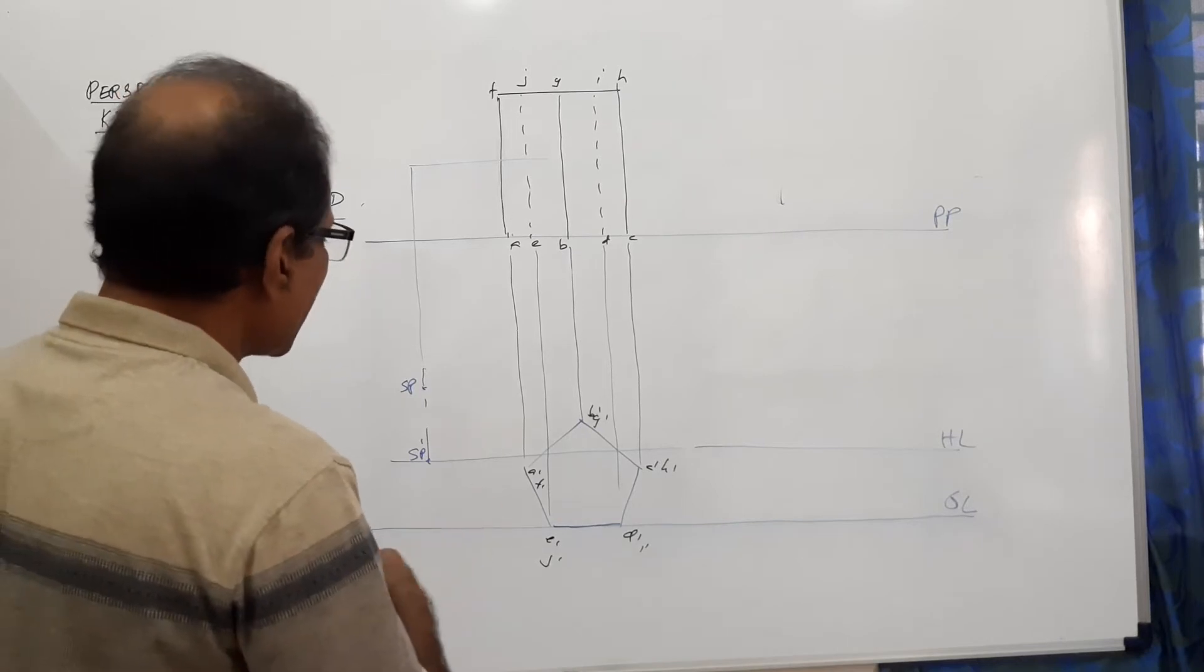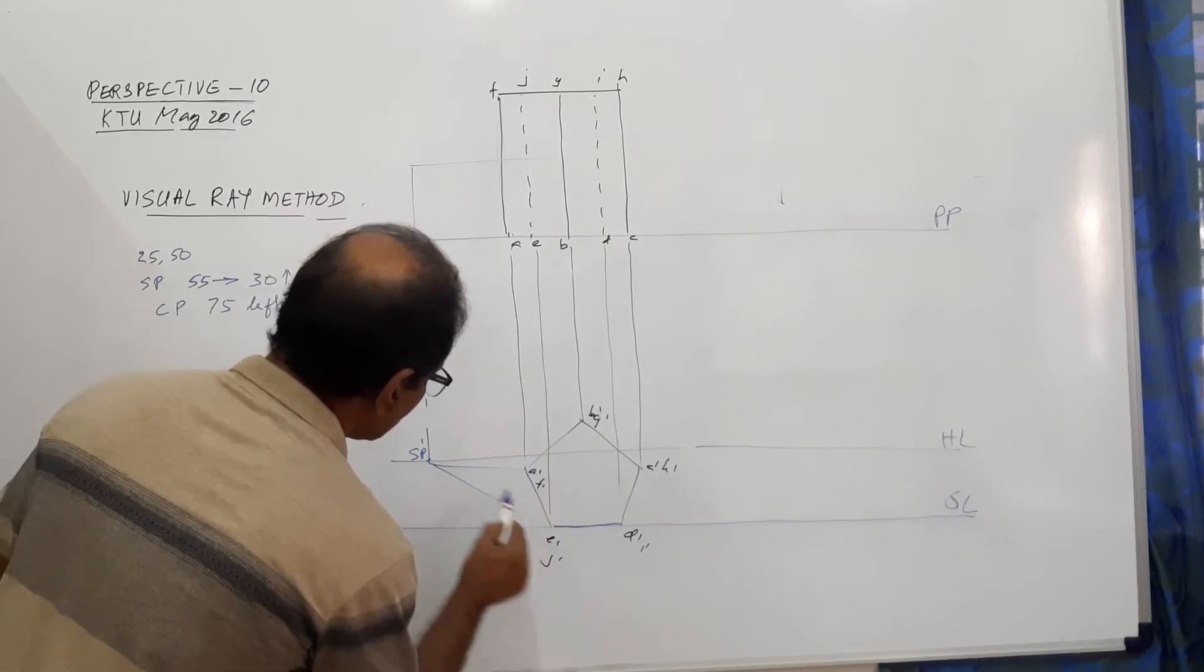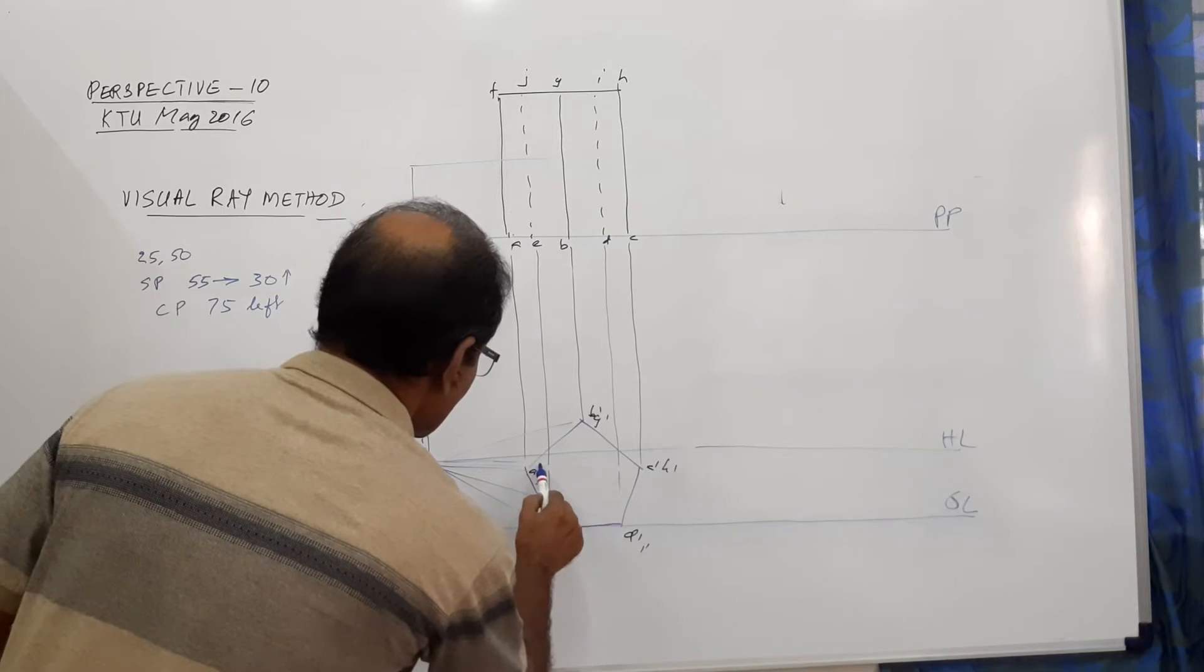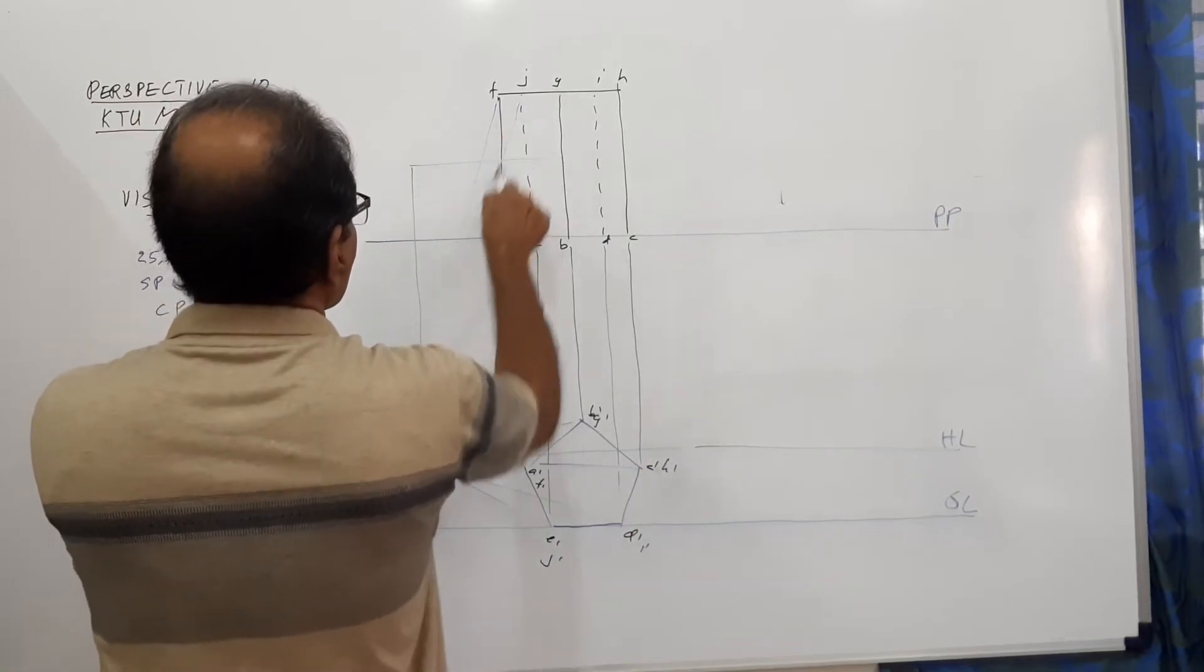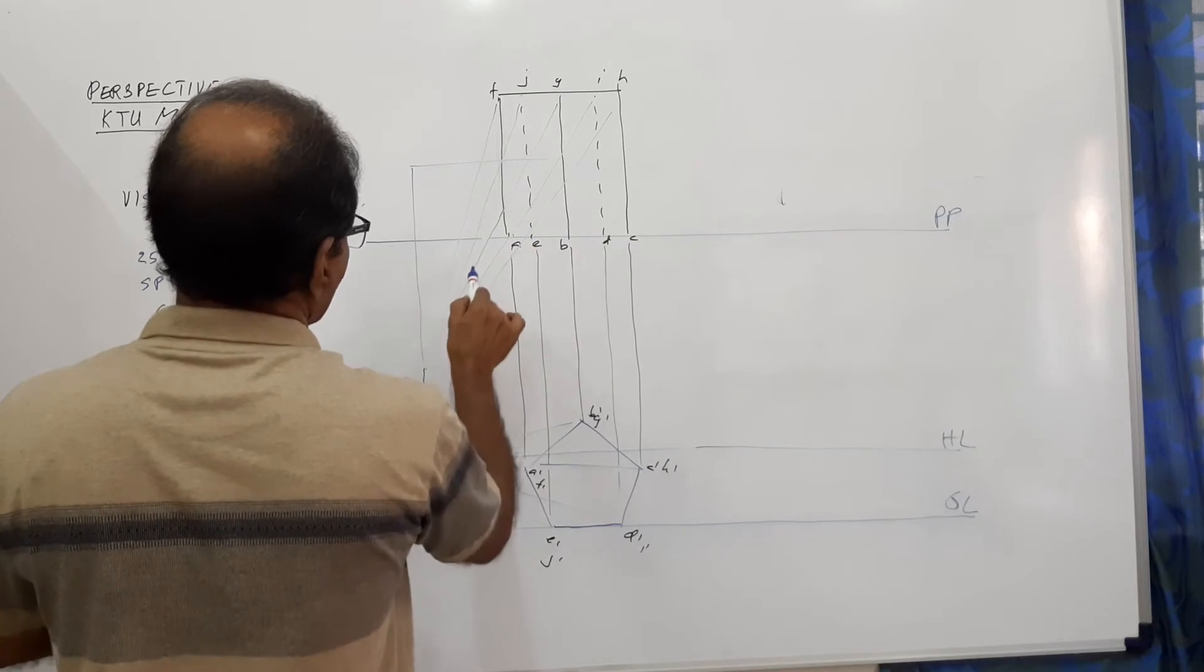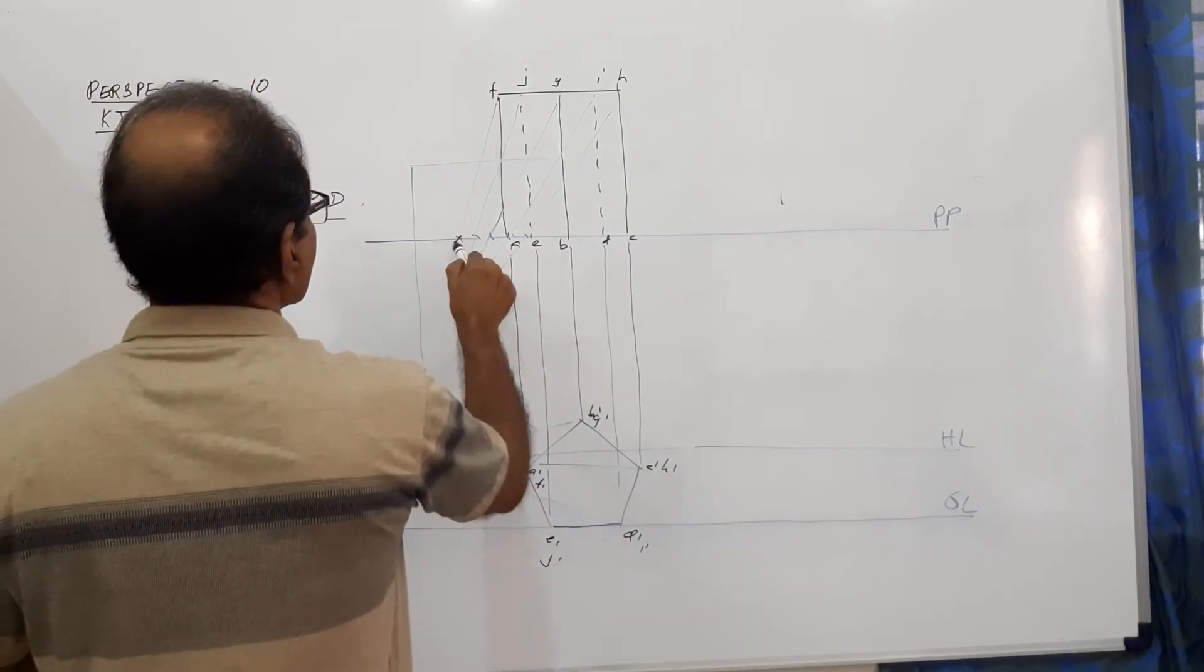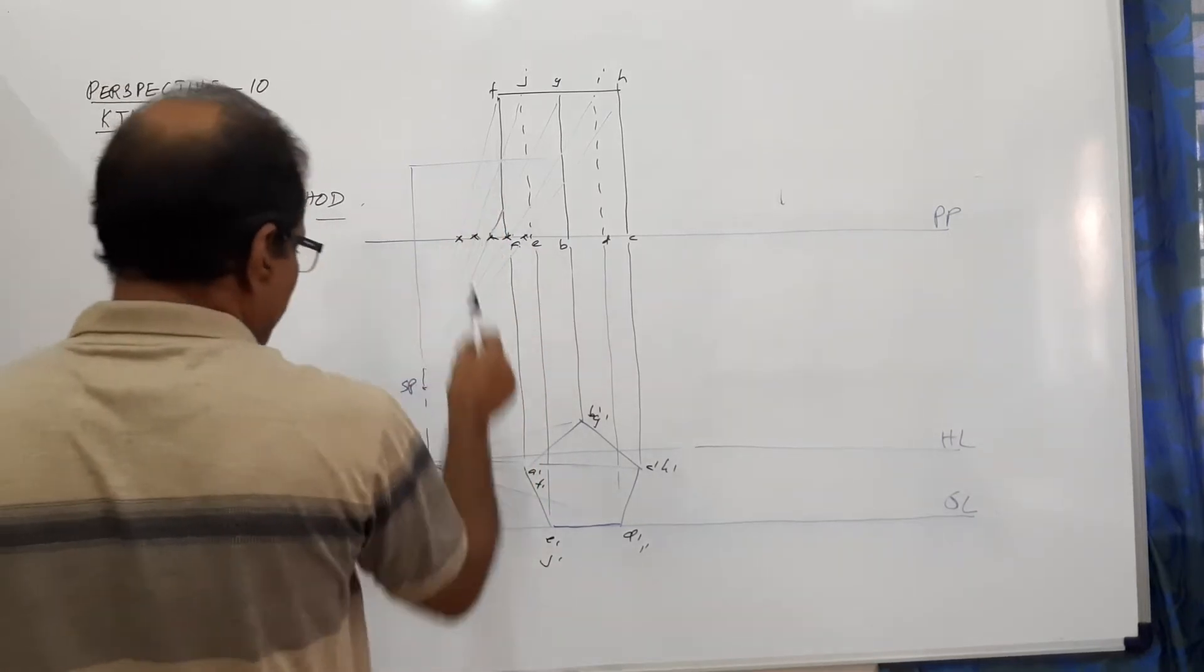Now, I joined all points of the elevation to SP dash. And all points of the plan to SP. These are the intercepts. Drop them. Drop the intercept of F to A dash. This is the intercept.